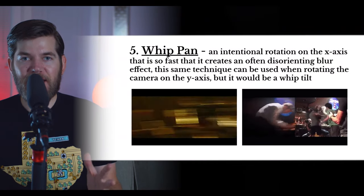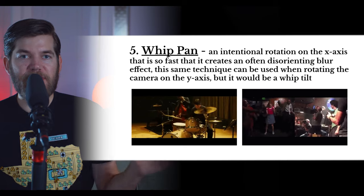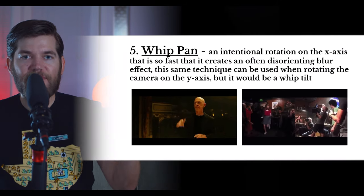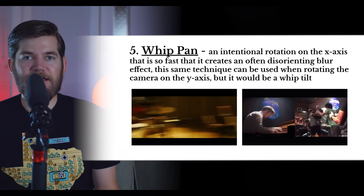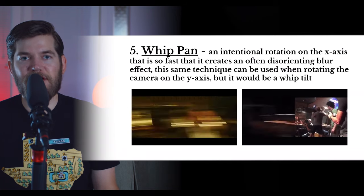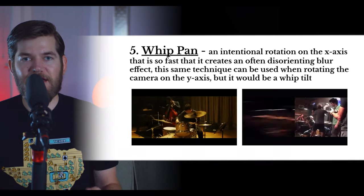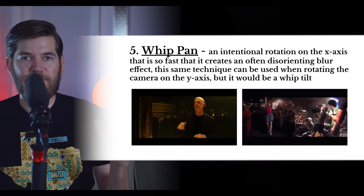We just discussed the three main techniques that can be achieved on a tripod by rotating on three different axes. Now we have a modifier. If we want to add an adjective to describe a pan that is extremely fast, we would call it a whip pan. A whip pan is when you intentionally whip the camera so fast that it begins to blur the image. This blur effect can be used for some clever editing techniques we'll learn about later. For now, all you need to know is that a whip pan is an extremely fast pan that blurs the image.